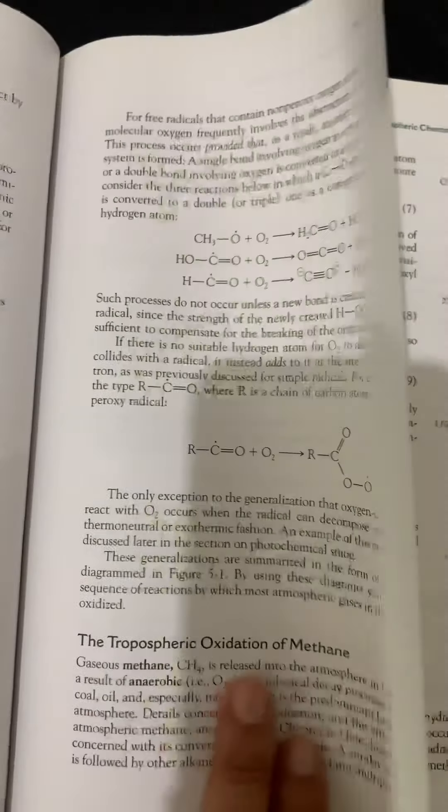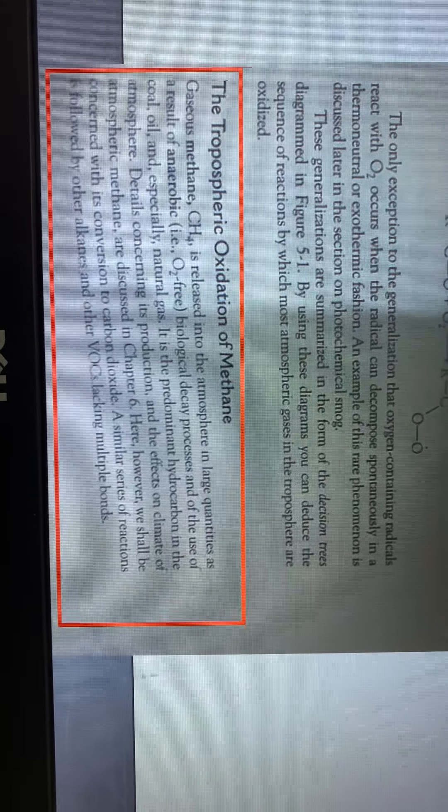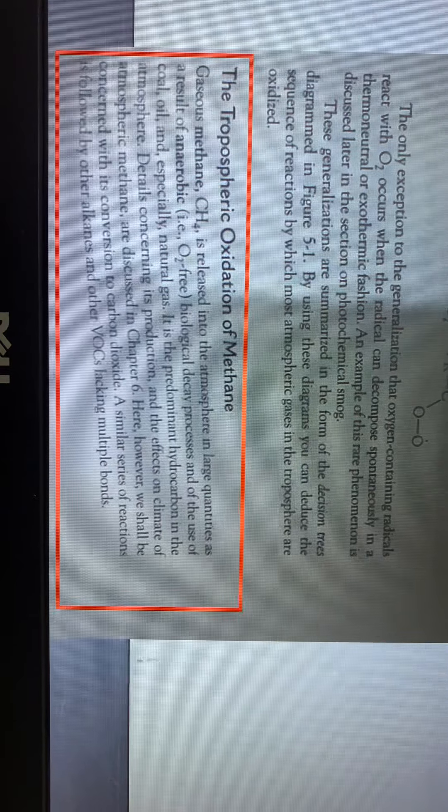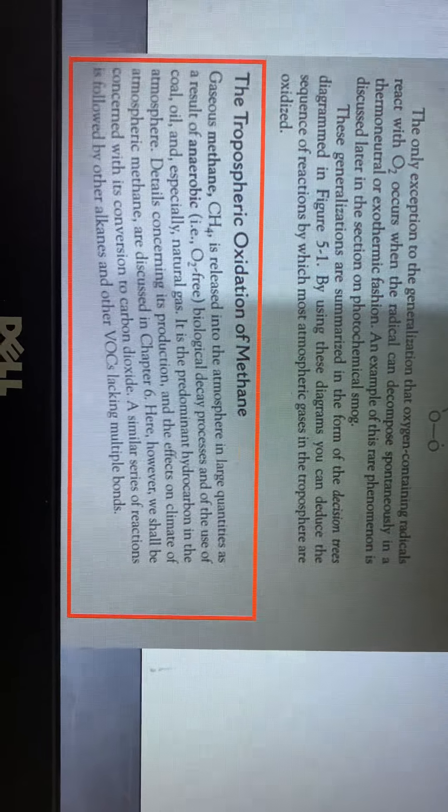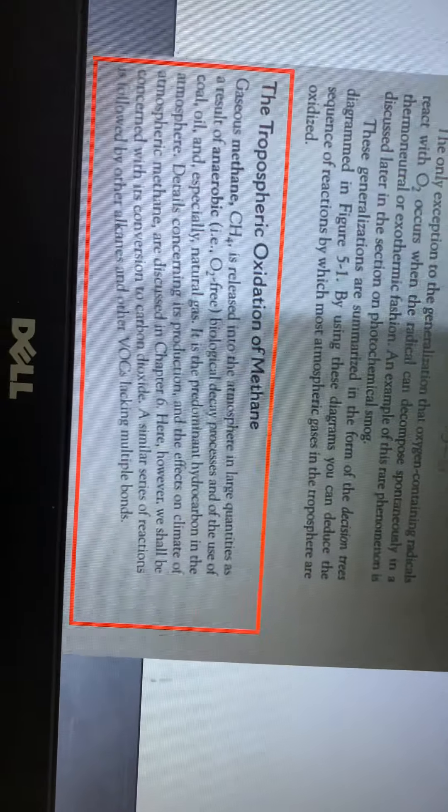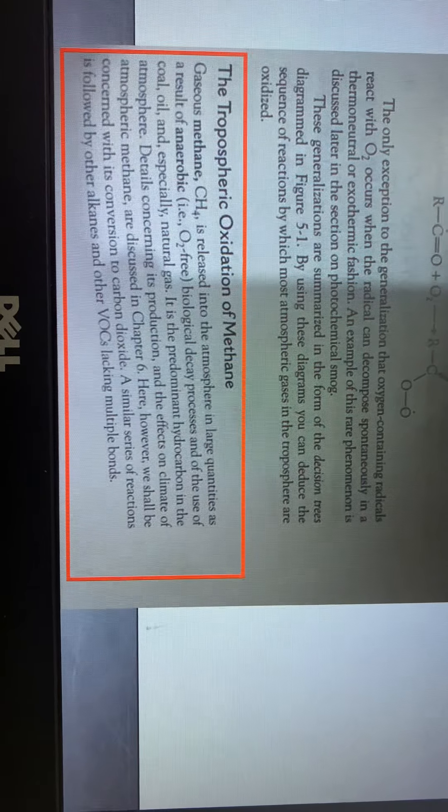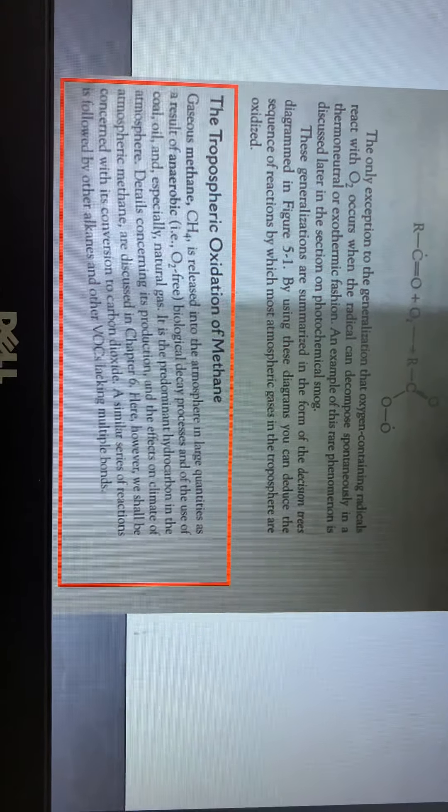Now we will study the topic of tropospheric oxidation of methane. Regarding this, you will see this lecture in the slides. What is gaseous methane released in the atmosphere as a result of anaerobic biological decay processes and because of the use of coal, oil, and especially natural gas. This is the result of methane in the atmosphere and it is the dominant hydrocarbon in the atmosphere. Here, major hydrocarbon that is methane. Details concerning its production and effects on climate. This is in a different chapter.